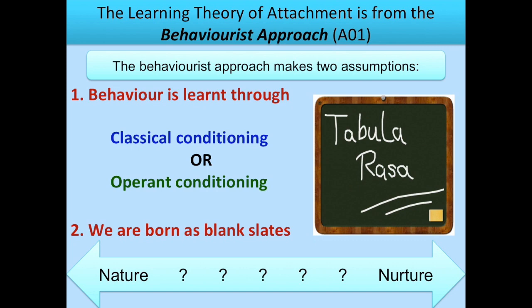The learning theory of attachment is from the behaviourist approach, and the behaviourist approach has two main assumptions. The first is that all behaviour is learned through either classical and/or operant conditioning. The second assumption is that when we're babies, we are born as a blank slate — tabula rasa — which means blank slate in Latin.